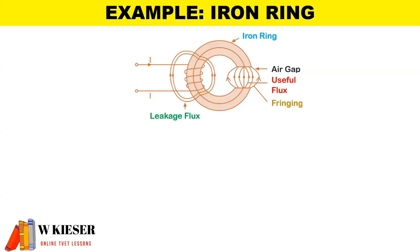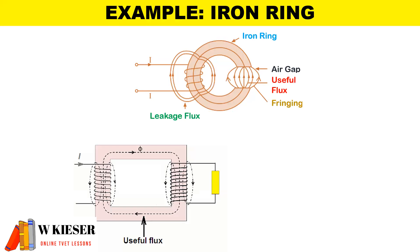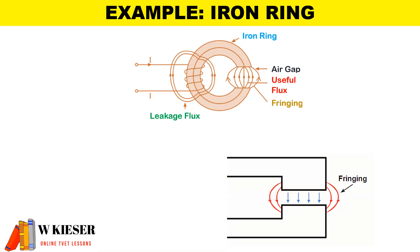For the example on an iron ring, our iron ring has an air gap where there is useful flux and fringing produced. The leakage flux happens where the coil is, almost like a current transformer. So the leakage flux occurs around the core where the coil is, and the fringing would occur around the air gap.